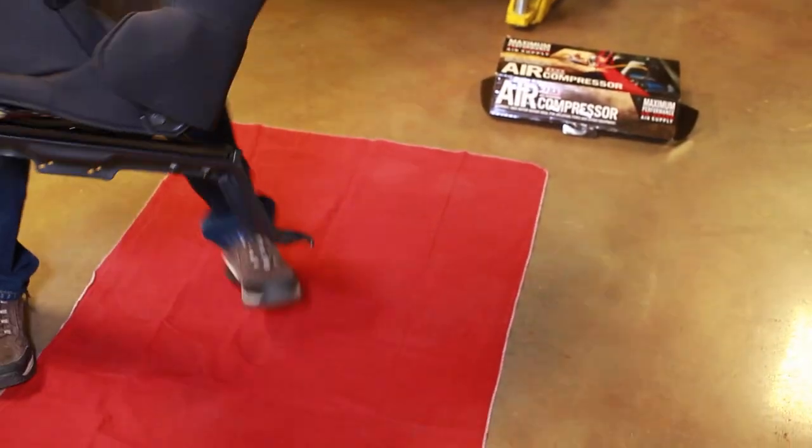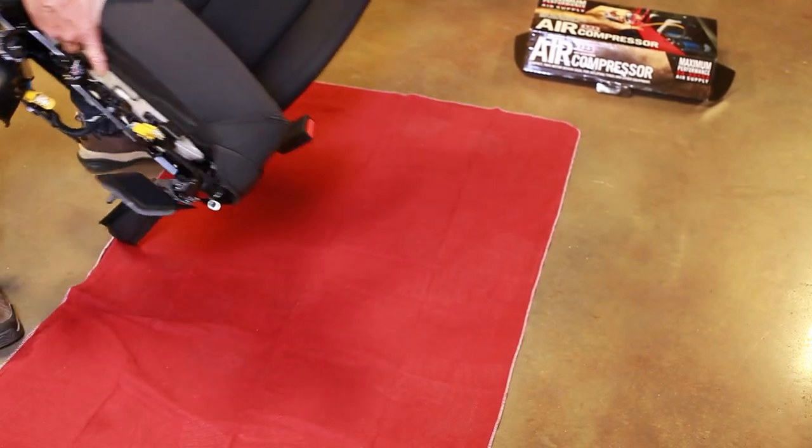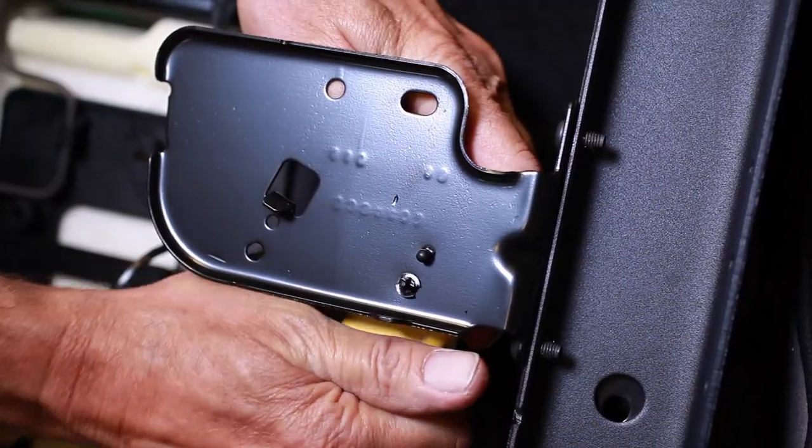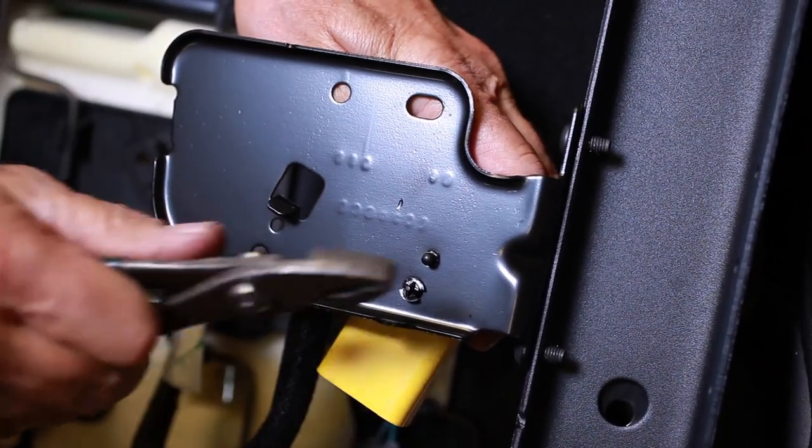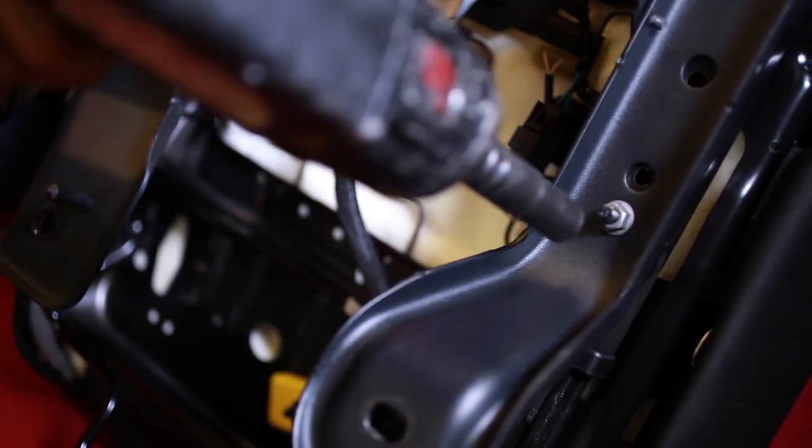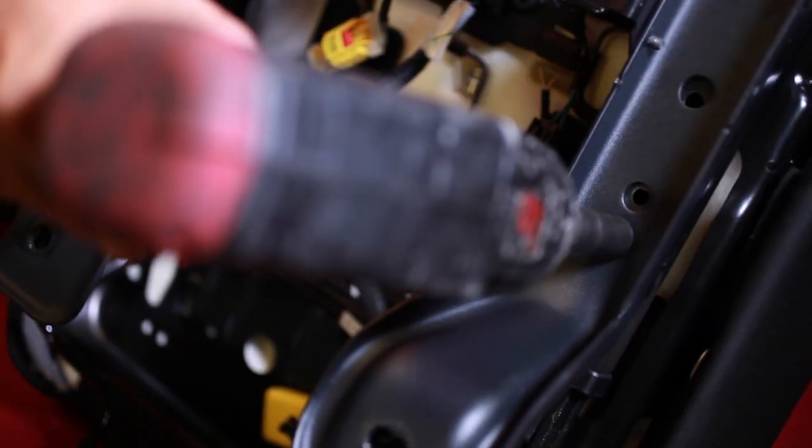Lift the seat out of the Jeep and position it so the bottom of the seat can easily be accessed. Remove the connector from its mounting bracket. Remove the two seat mounting brackets using a 13 millimeter.